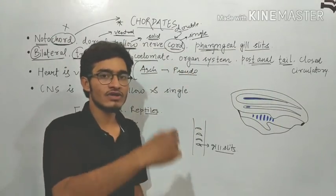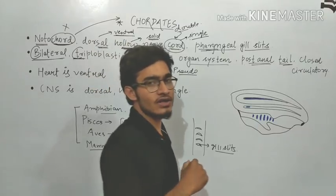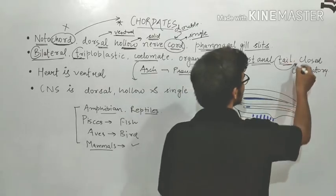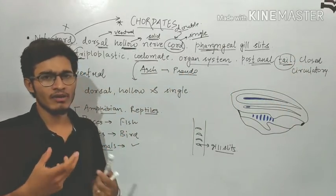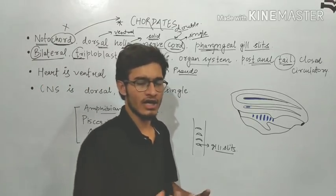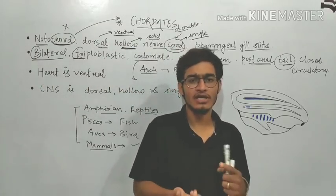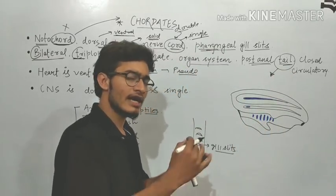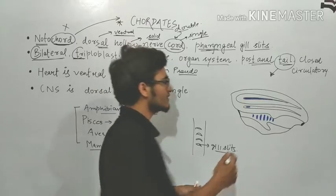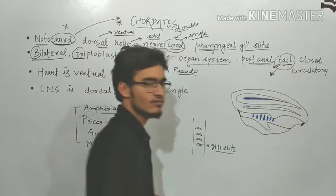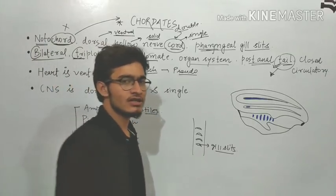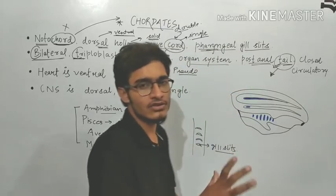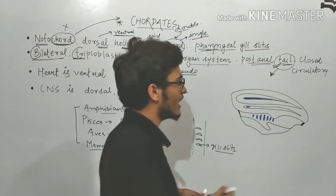Post anal tail. Now, post means after, anal means anus. So after the posterior opening, that is the anus, a small tail will be present. Now you must be thinking that mammals are not having tail. Most of the mammals are not having tail, including human beings. So we are not talking about tails at the adult stage. At any stage in the life history, or in the embryonic development, the tail can be present. So when we talk about post anal tail, it is not in the adult individual, it is present in embryonic development.